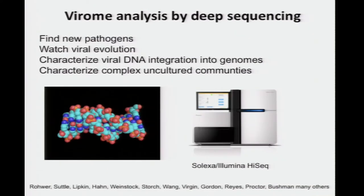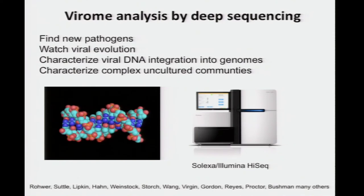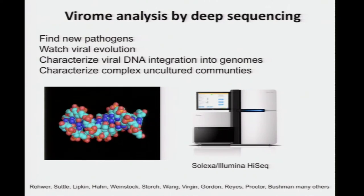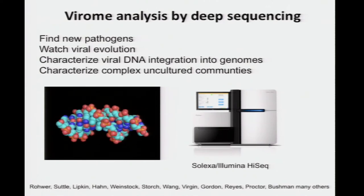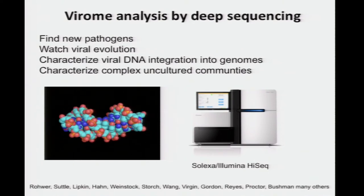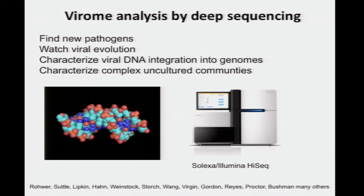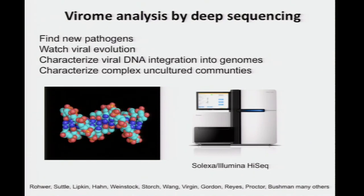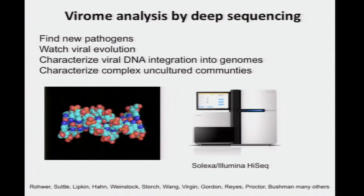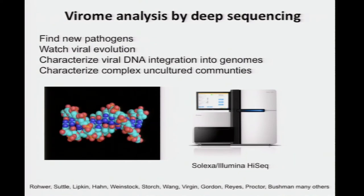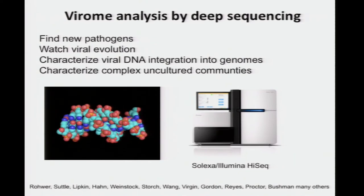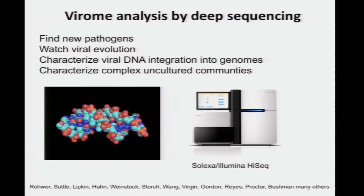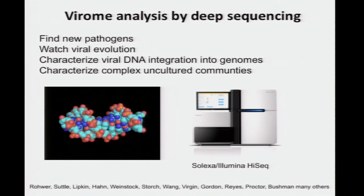One of the things that's really launched this area has been the development of the new deep sequencing methods. You can apply those to studies of viruses in a variety of ways: to hunt for new pathogens, to watch viral evolution — for example, HIV quasi-species evolving in response to a new antiviral agent and developing resistance — to characterize where integrating viruses are integrating into genomes, and to characterize complex uncultured communities of viruses. What I'll be emphasizing for much of the talk is that last one, using deep sequencing, mostly Illumina HiSeq, to characterize the human virome and see what's out there.